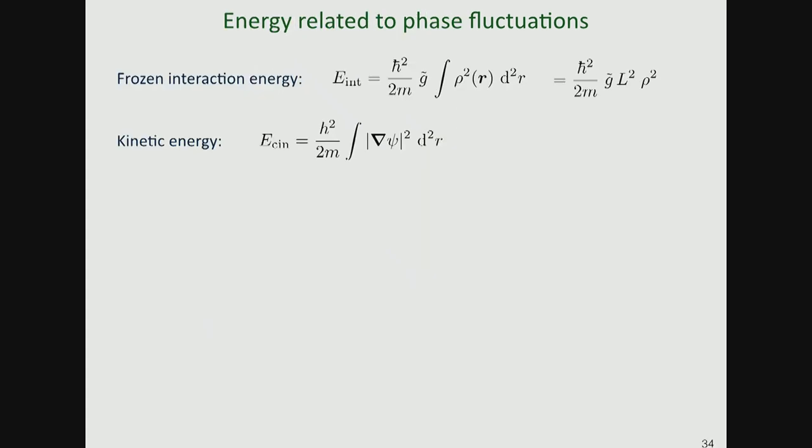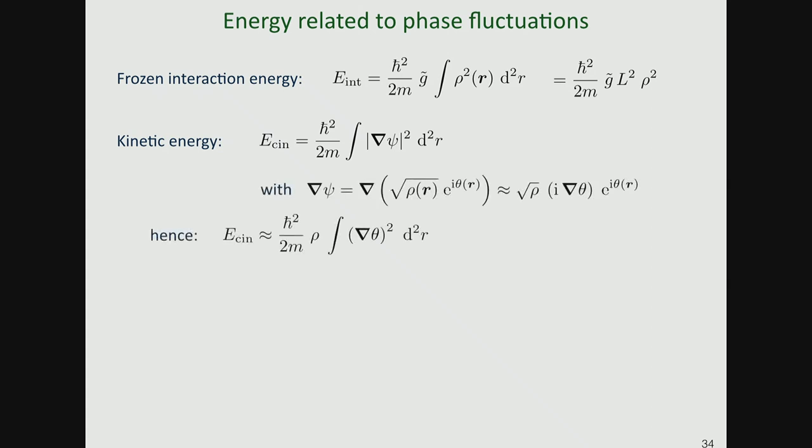Concentrating on phase fluctuations: the interaction energy is frozen because it depends only on |ψ|⁴, so the phase doesn't enter. The only remaining term is kinetic energy. Writing ψ = √ρ · e^(iθ) with ρ constant, I'm left with the kinetic energy term: (ℏ²/2m) ρ₀ ∫|∇θ|² d²r. This is the energy relevant for describing a Bose gas at low temperature or high phase space density.